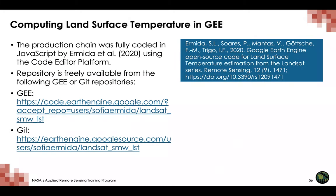The processing chain for generating Landsat land surface temperature was fully coded in JavaScript by Ermita et al. 2020 using the code editor platform. The open source repository with all associated modules can be accessed at the link provided. To learn more about how the algorithm was developed, the station data used for validation, and the results of validation exercises, please refer to the reference by Ermita et al. 2020.